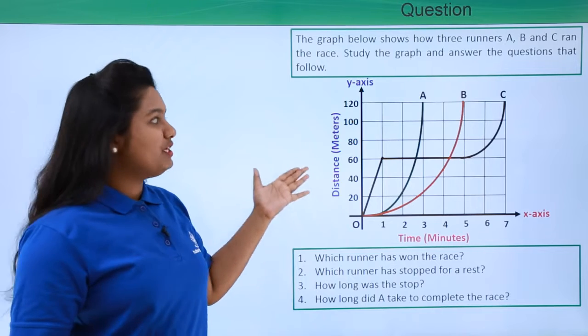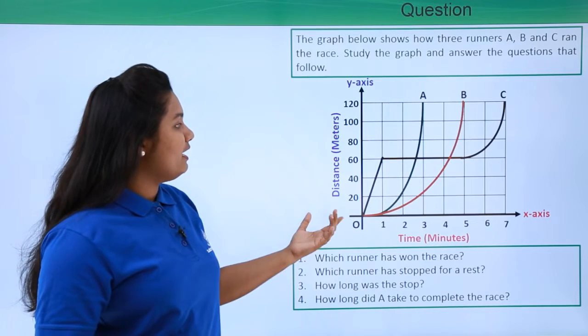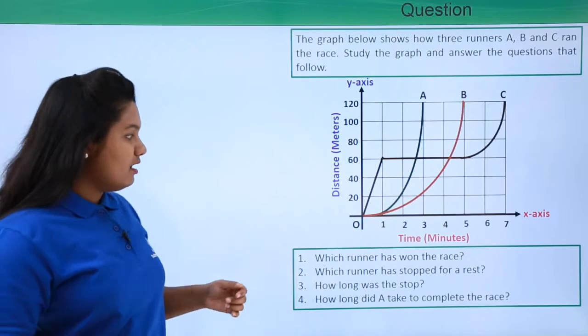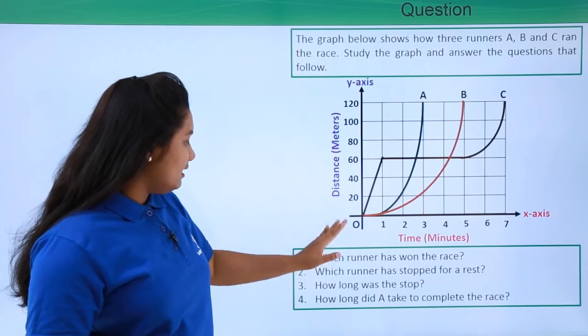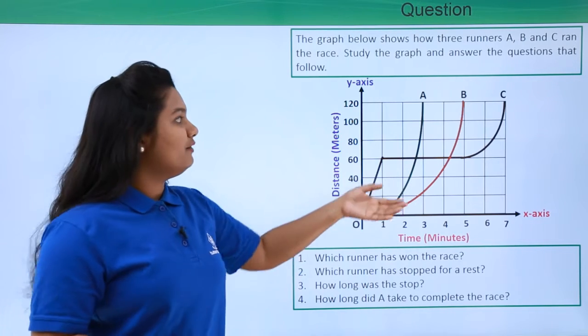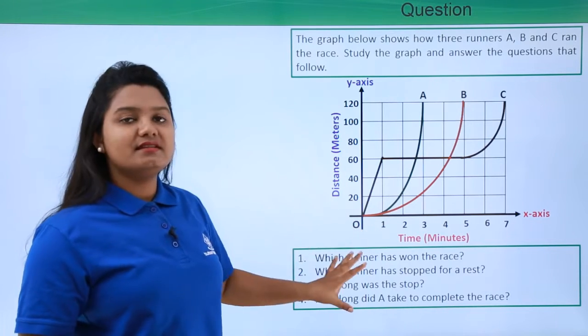So here the question has provided us with a distance-time graph which shows the way that A, B, and C, the three runners, finished the race. Now we need to answer these four questions based on this graph. We need to study the graph first and answer all these questions based on that.